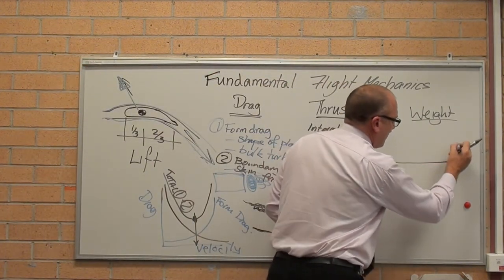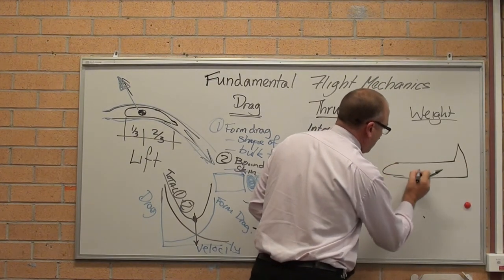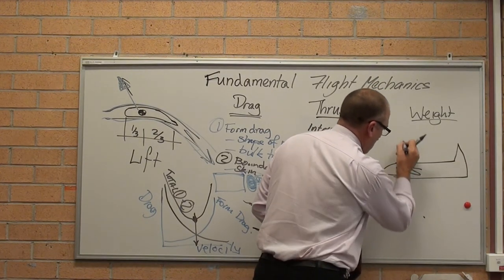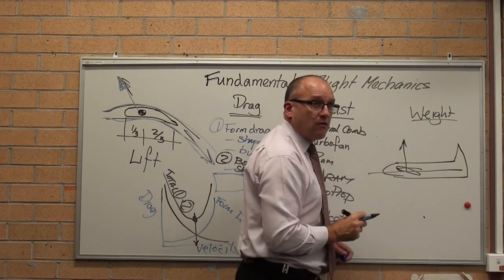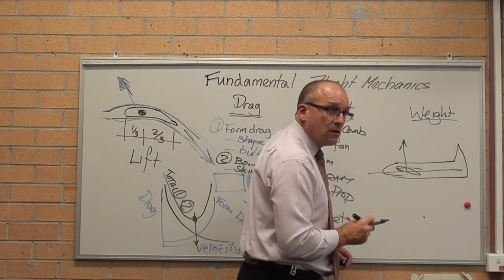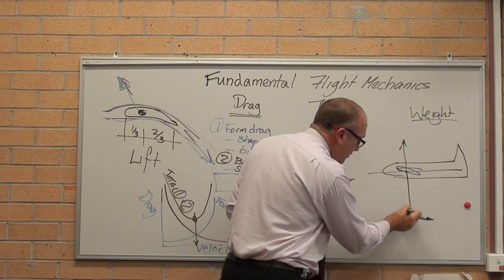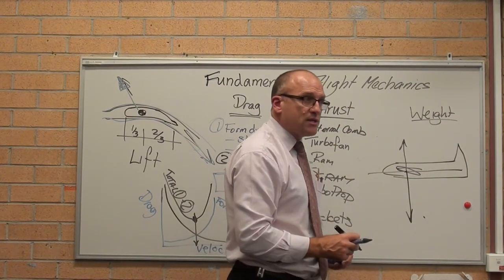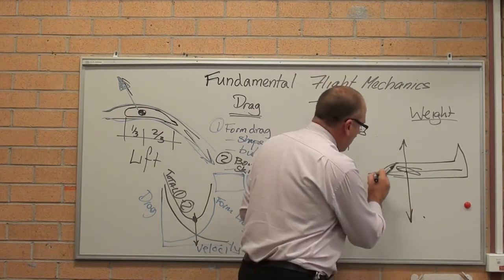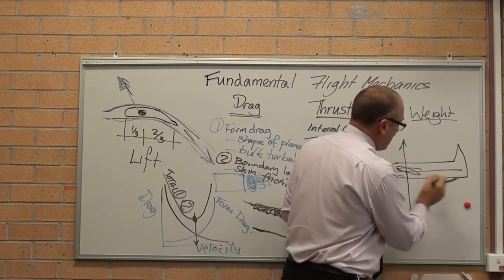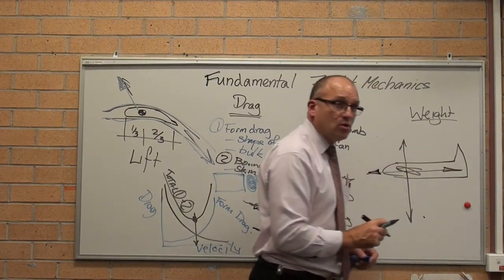The center of lift on a wing is about one third of the way back. Lift, as far as the technical definition, lift is at 90 degrees to the axis of the aircraft, always. Weight, oddly enough, always points down. Thrust is along the axis of the aircraft, drag pulls it back.